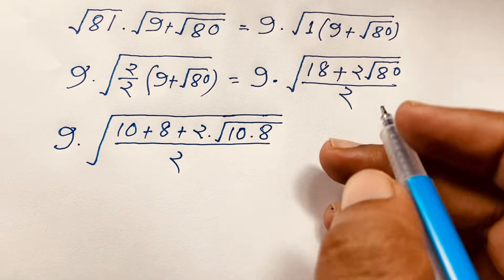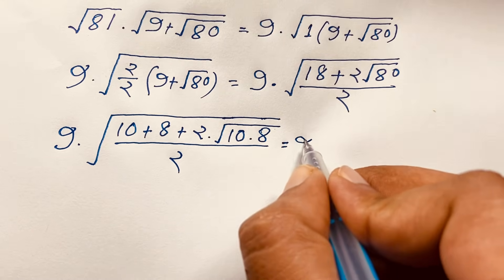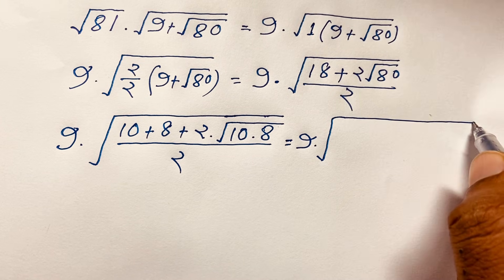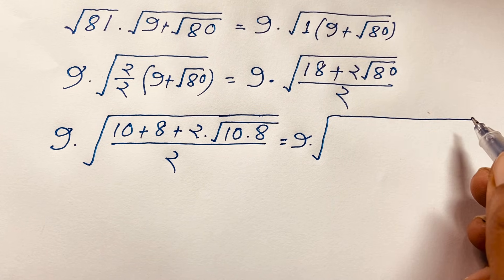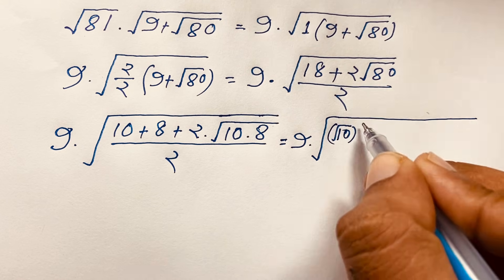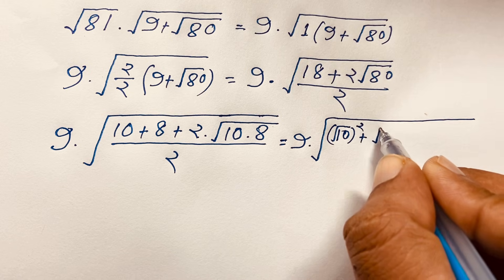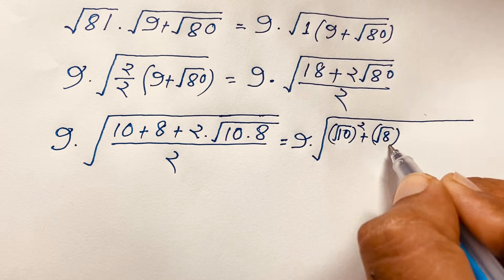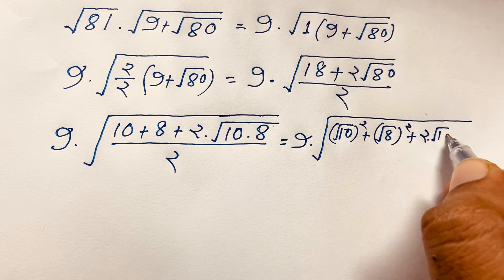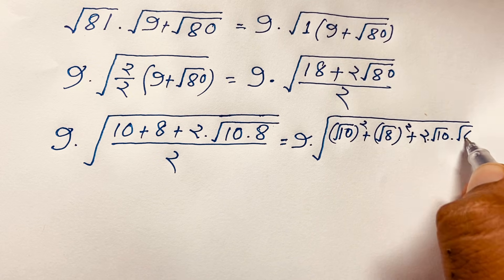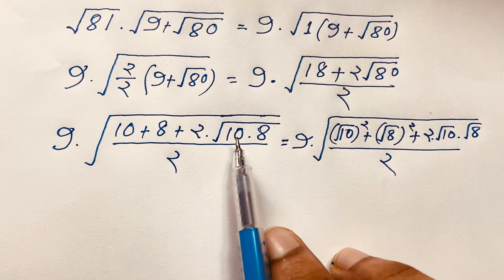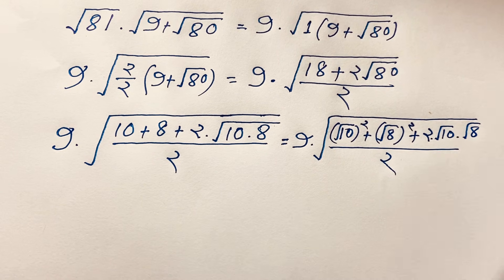Now I apply the perfect square formula (a + b)² = a² + b² + 2ab, where the 2ab term is 2 times square root 10 times square root 8, over 2.